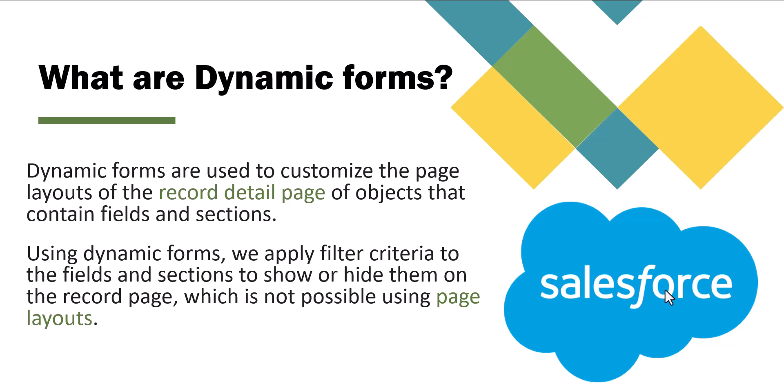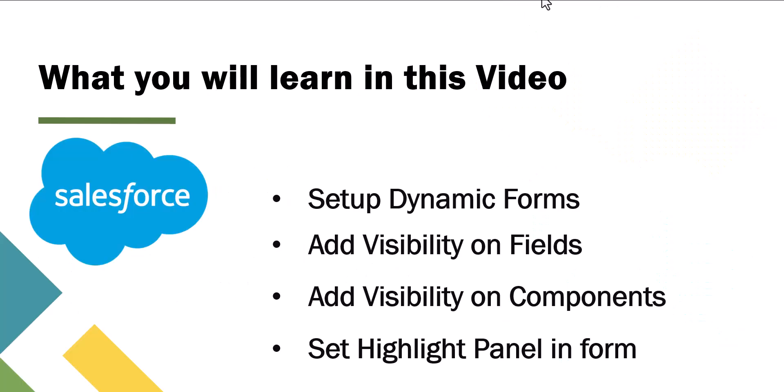Before starting the setup of dynamic forms, let me explain what dynamic forms are in Salesforce and their use cases. With dynamic forms, you can customize page layouts to display fields and sections based on certain criteria like user profile, record types, or field values. You have full control over what the user sees, including applying conditional visibility on fields and sections. This improves efficiency and reduces clutter. Previously we had static page layouts, and after the 2022 release, dynamic forms became available. You can directly add fields to the record page and hide them depending on user context, without modifying the underlying page layout.